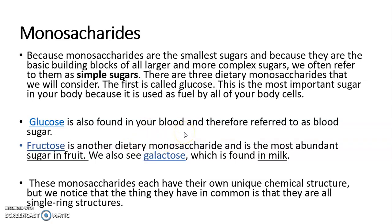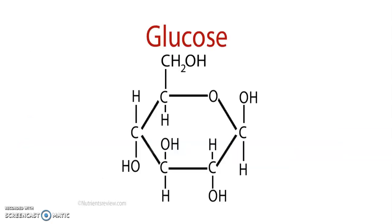Fructose is another type of monosaccharide, found in fruits. The third type of monosaccharide is galactose, which is found in milk. These monosaccharides differ in their structure but are all considered the simplest form of carbohydrates. The structure of glucose has a single ring shape, composed mainly of carbon, hydrogen, and oxygen — that is why it is an organic molecule. Fructose and galactose also have ring shapes, and all three can generate energy for the body.